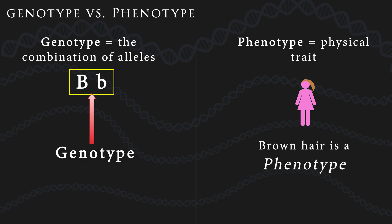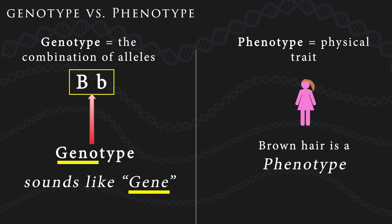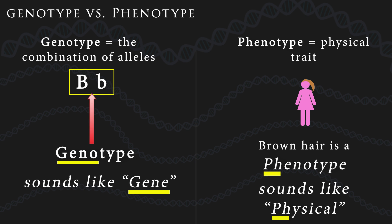Here's an easy way to remember it. Genotype sounds like gene — it's your genetic code. Phenotype sounds like physical — it's what you actually see.